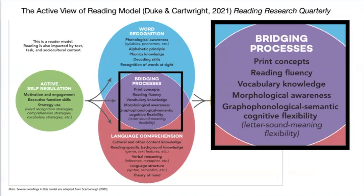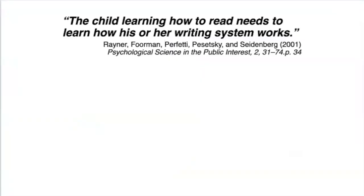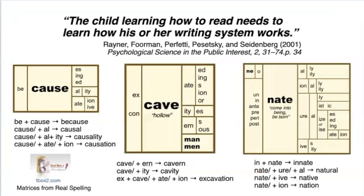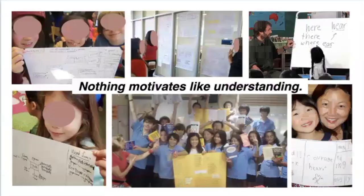Not only morphology, but graphophonological-semantic cognitive flexibility — that's my favorite. The matrix and word sum provide instructional scaffolding to target exactly this cognitive flexibility. For reading comprehension, the following quote sums up my argument quite well: 'The child learning how to read needs to learn how his or her writing system works.' We should leverage the matrix and word sum to meet this goal, especially for those behind in literacy. Avoidance is a human response to the shame of not being able to read at one's intellectual level. As Marion Wolfe reminds us, you can't learn where your attention doesn't shine. As I argue, nothing motivates like understanding. Thank you.